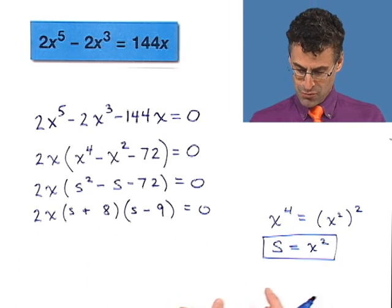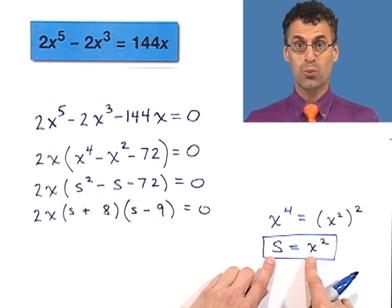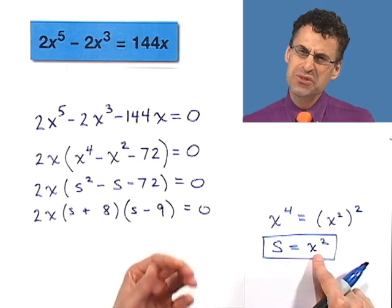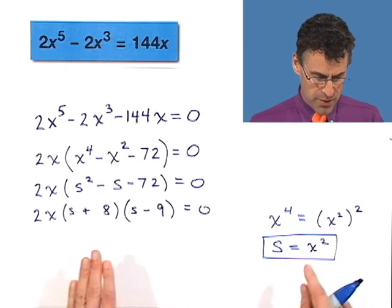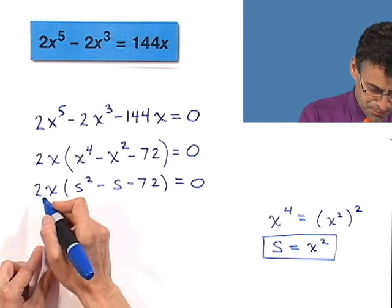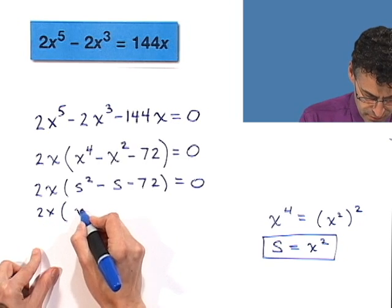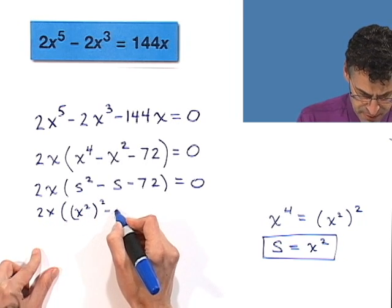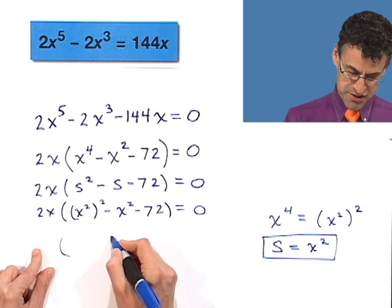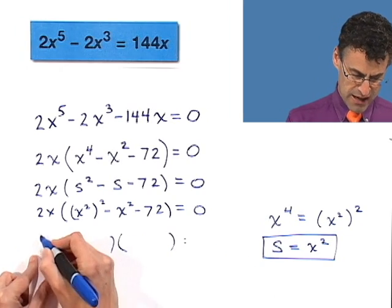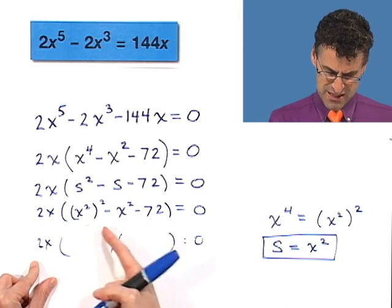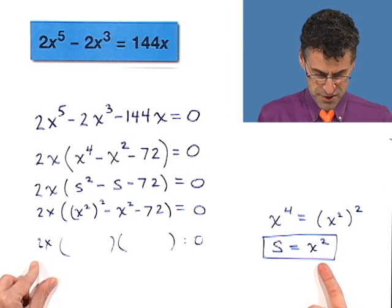Here's a little tricky thing, though. We have to now put back what the s was. What is s? s is just x squared. It was just a little way to help us factor. If you didn't like this, you could have actually written it directly with x's. And some people like this, crazy of course, but they're out there. If you have trouble kind of seeing this squared squared stuff and that scares you, then just call it something else for a second.